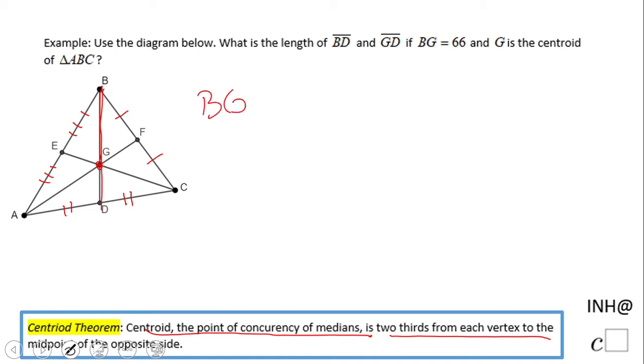Another way to do this problem is by looking at BG and GD. These segments have this relationship: GD times two equals BG, or BG is twice GD.